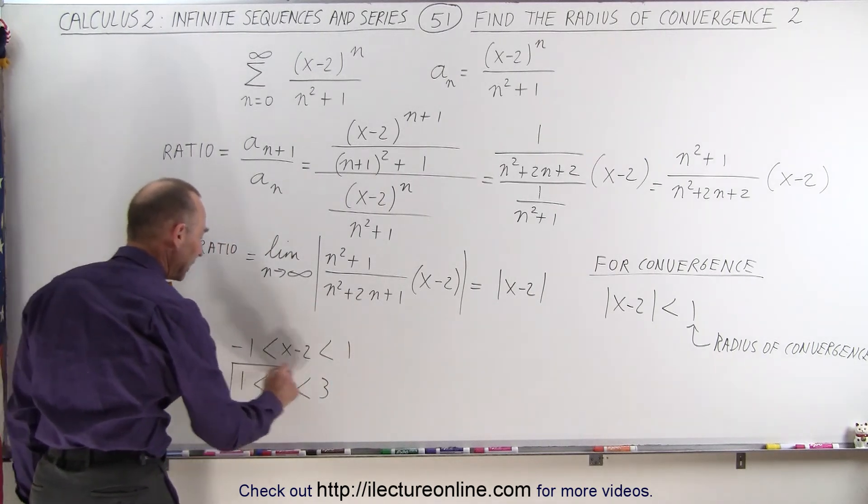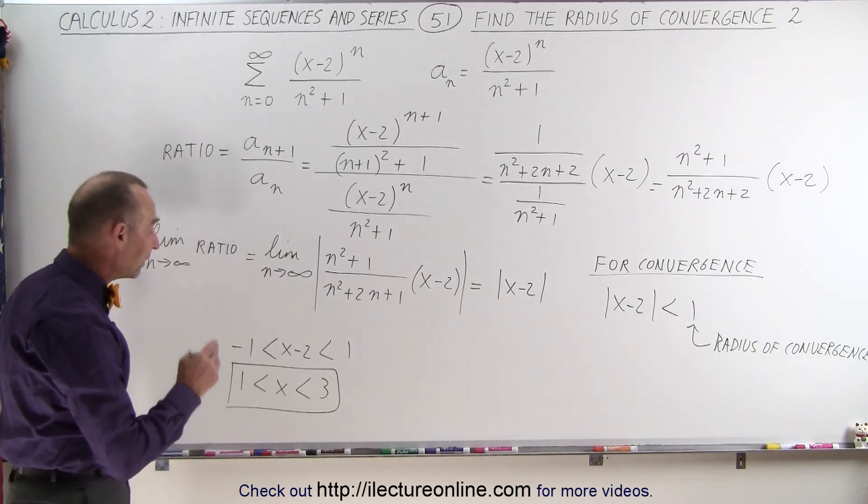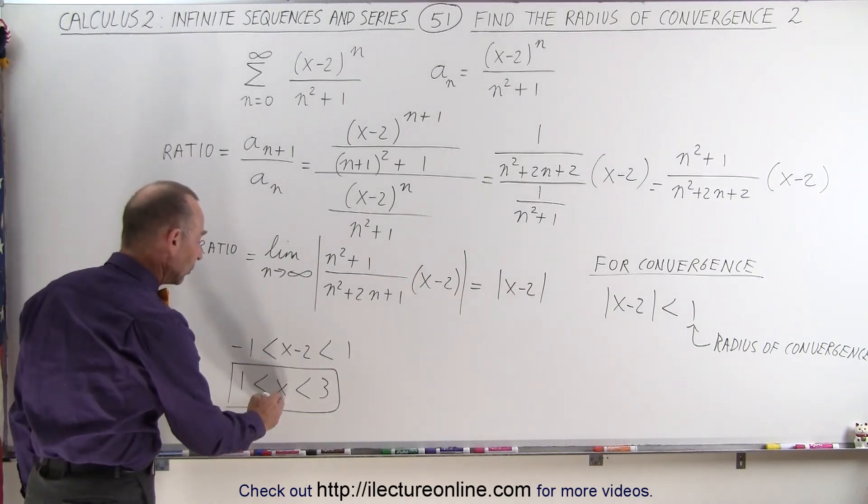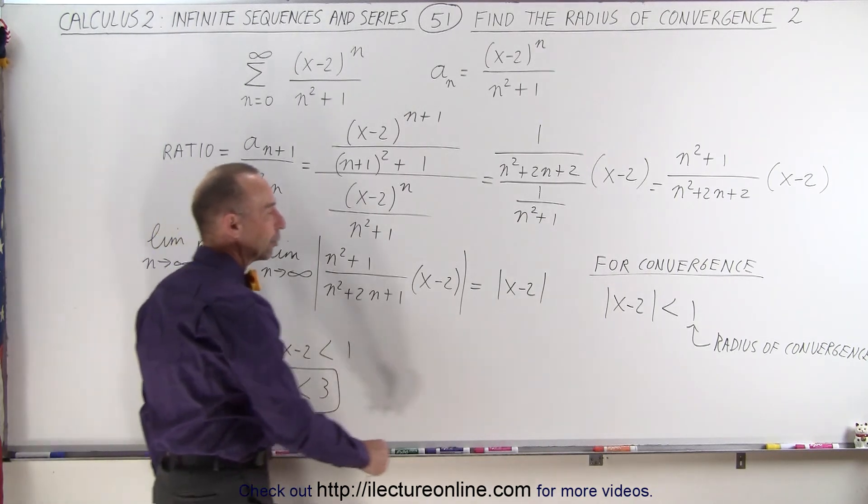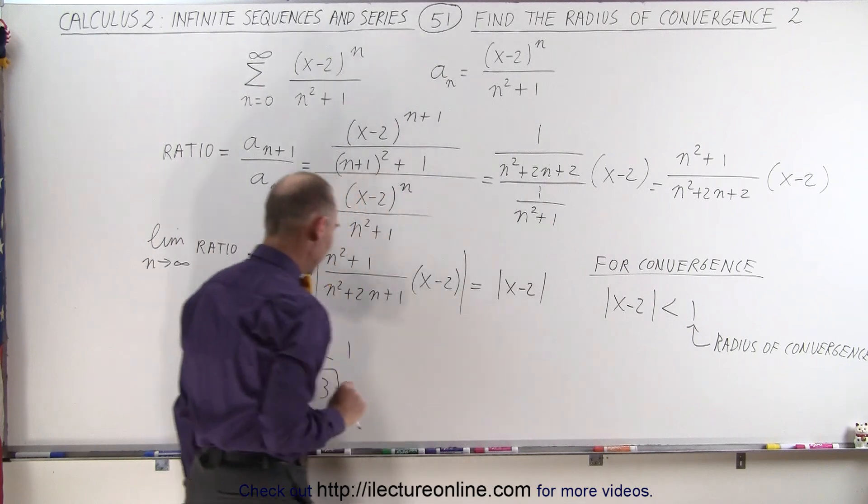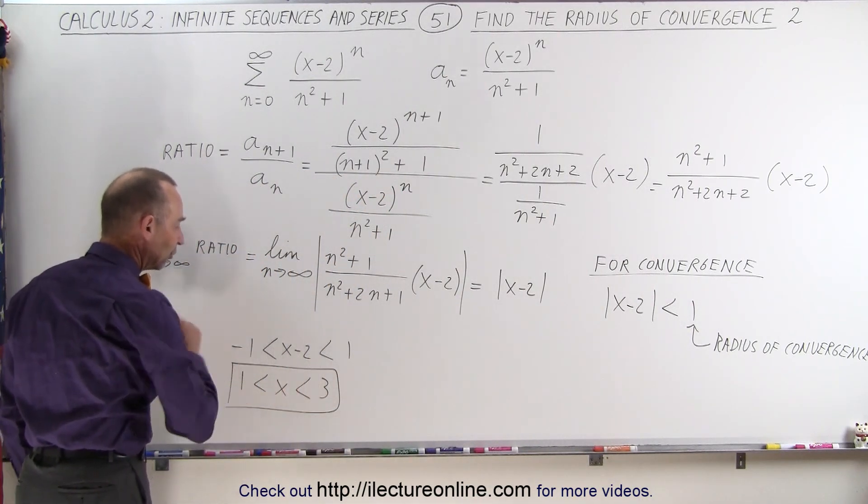This becomes the interval of convergence, and the radius is the distance from the middle of that interval, which is 2, to either end of that interval, to 3 or to 1. The radius of convergence being 1 is simply the distance from the middle value to 3, or from the middle value to 1.